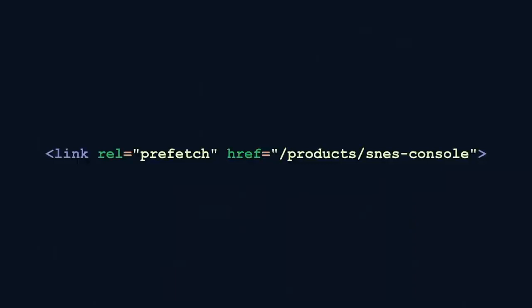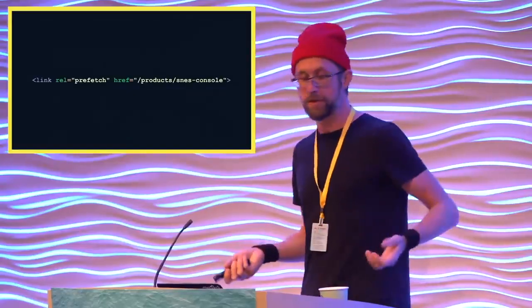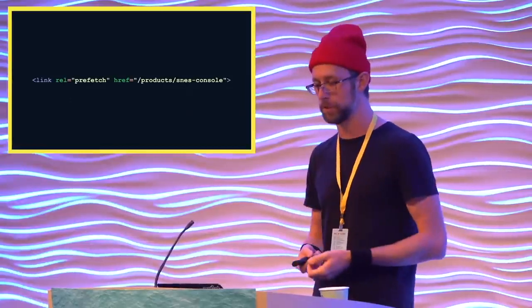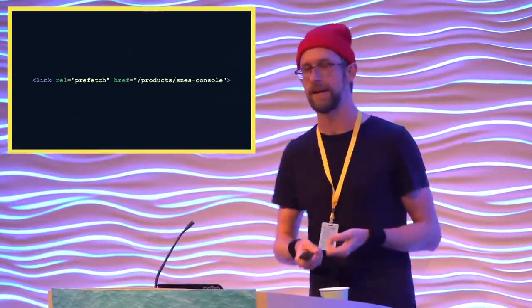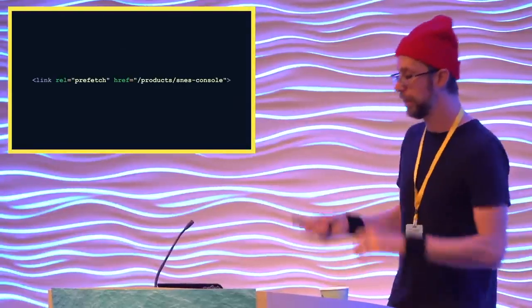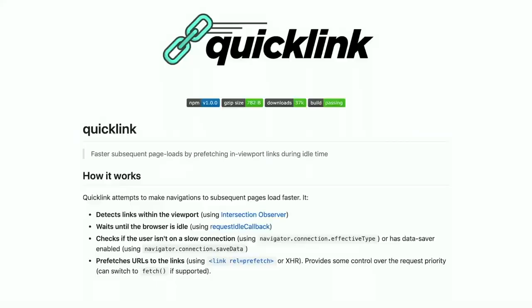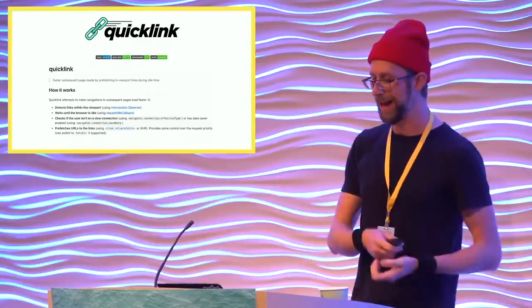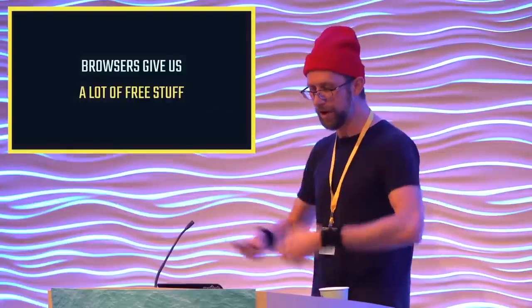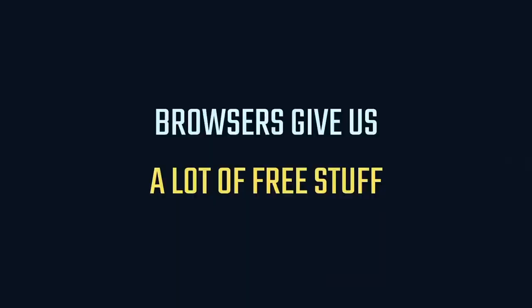If you want to avoid SPAs but want to make navigation snappier and rely on a platform-provided solution, link prefetching may fit the bill. It can seriously boost loading performance by fetching page HTML in advance of the user requesting it. It's not perfect — you could potentially waste data if it's not done carefully. But to address these potential shortcomings, the Google Chrome team offers a very small link prefetching script that will only prefetch links as they appear in the viewport using an intersection observer, when the main thread is idle and if the network isn't slow. The browser gives us a lot for free — let's use that stuff whenever possible so we can focus on the harder problems of web development.